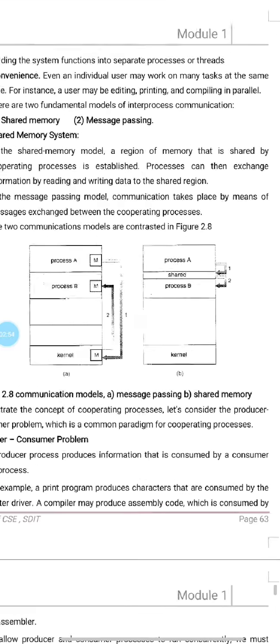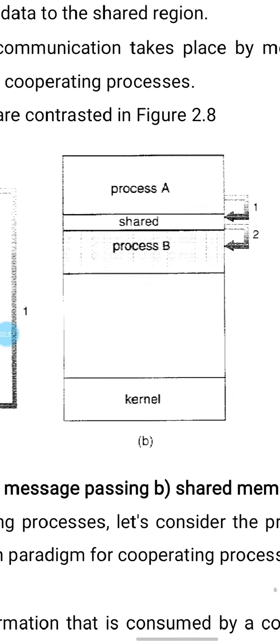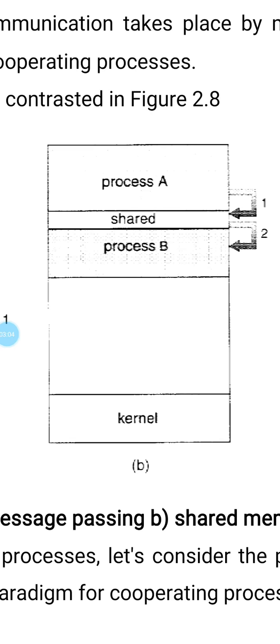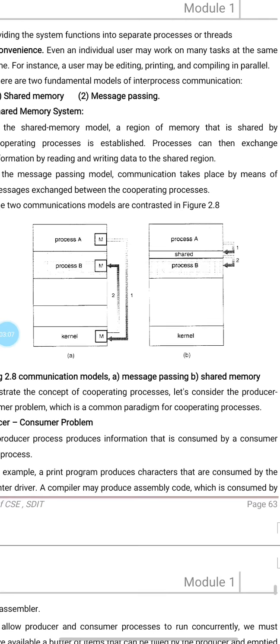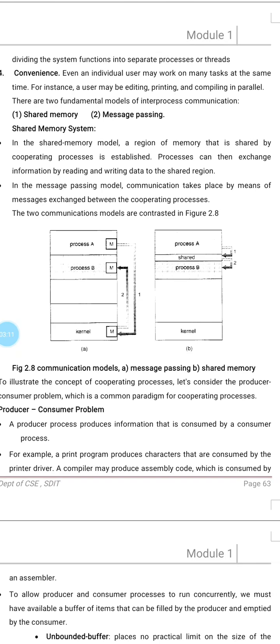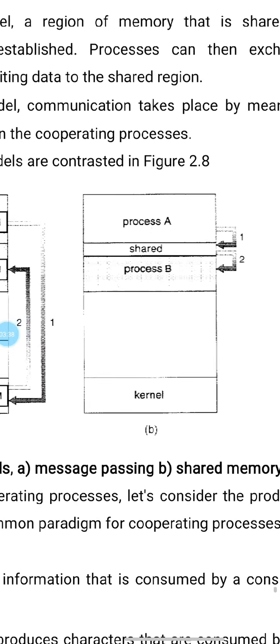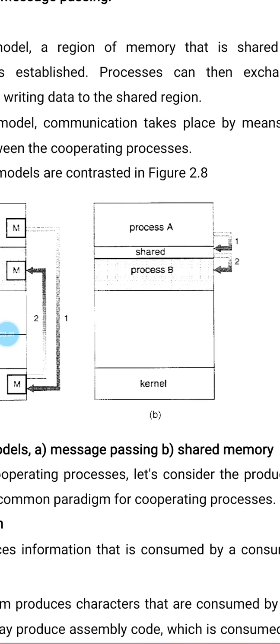Under the shared memory model, you can see in this diagram: there is process A, process B, the kernel, and a shared region in between them. In this model, there is a region of memory shared by cooperating processes, and processes can exchange information by reading and writing to that shared region. As shown in the diagram, process A is writing something to the shared region, which is then read by process B.